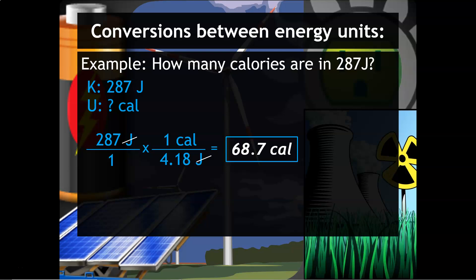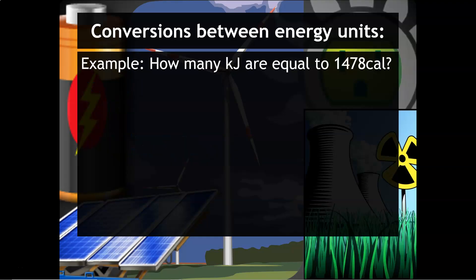This one says how many kilojoules are equal to 1478 calories? So again, I'm going to break it down into my known and my unknown. I'm given calories and I have to get into joules. I can't go straight to kilojoules just yet because I only know a conversion from calories into joules. So again, one calorie equals 4.18 joules. Calories and calories divide out, and then a thousand joules equals one kilojoule. The joules and joules divide out and you should get an answer of 6.178 kilojoules.